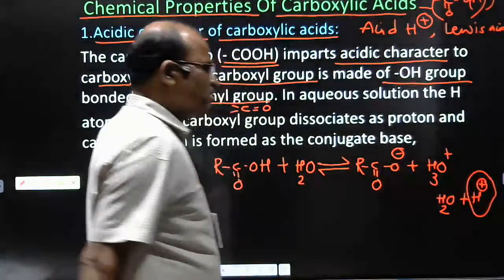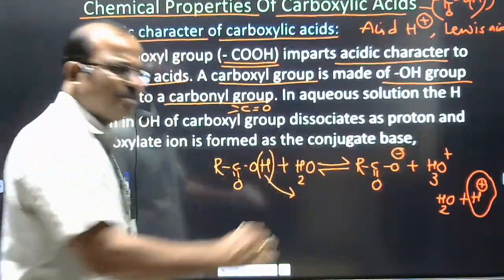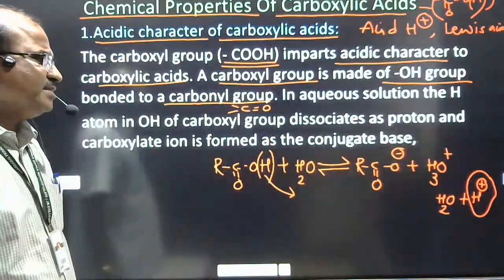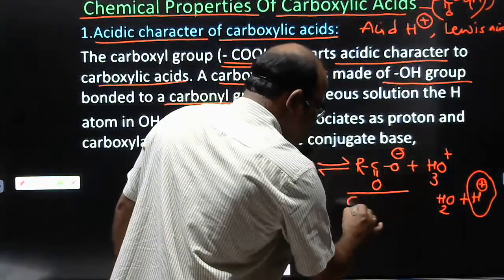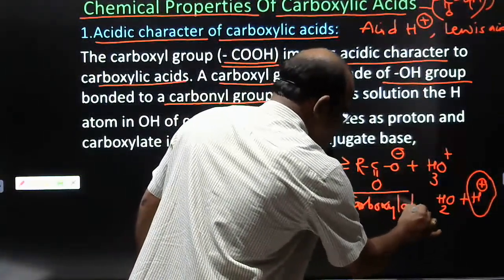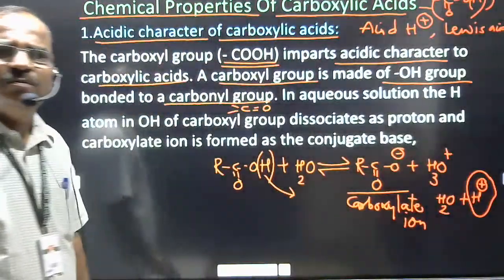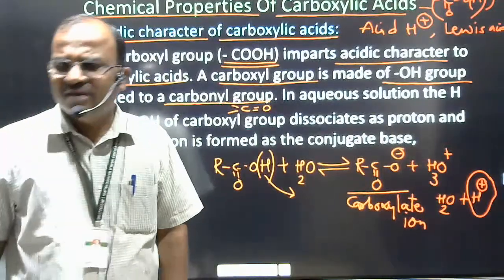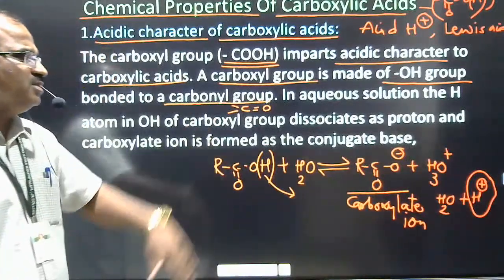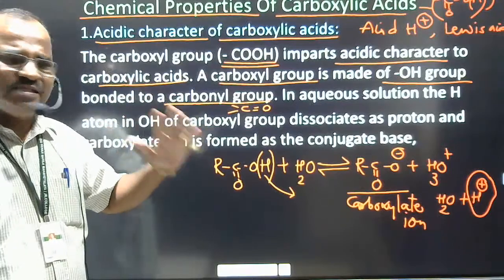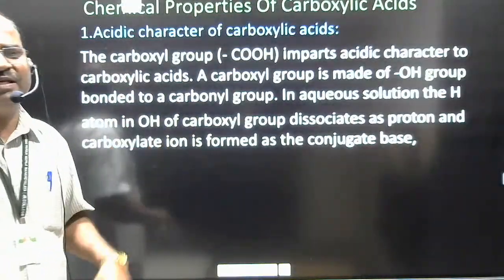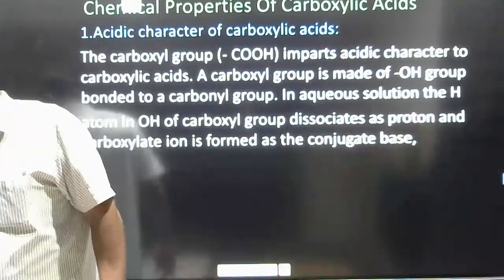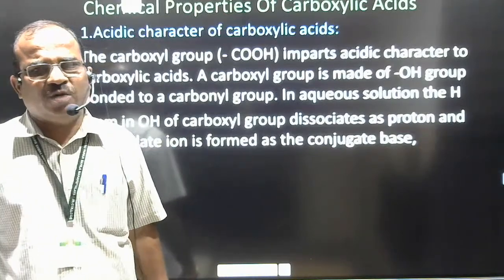The compound which gives H plus ions is called a carboxylic acid. This carboxylic acid gives two ions: one is the carboxylate ion and another is the proton or hydronium ion. The reaction is: R COOH reacts with water to give R COO minus and H plus. This reaction is called the dissociation reaction of carboxylic acid.